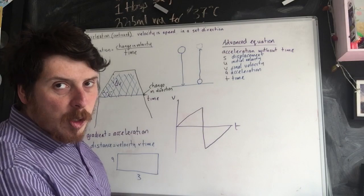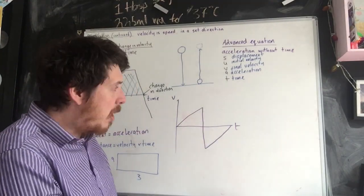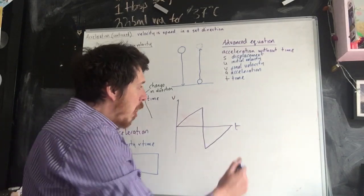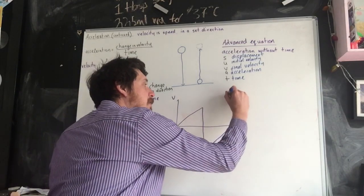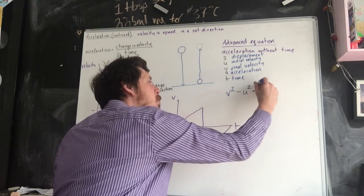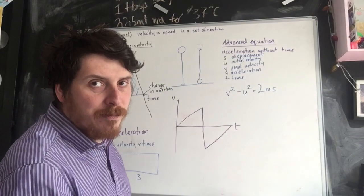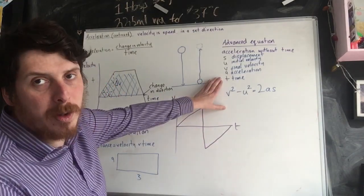If you've got an equation where you don't get given the time, that's fine. On the data sheet, you are given V squared take away U squared equals 2AS. So if you get a question and there's no time, use that equation instead.